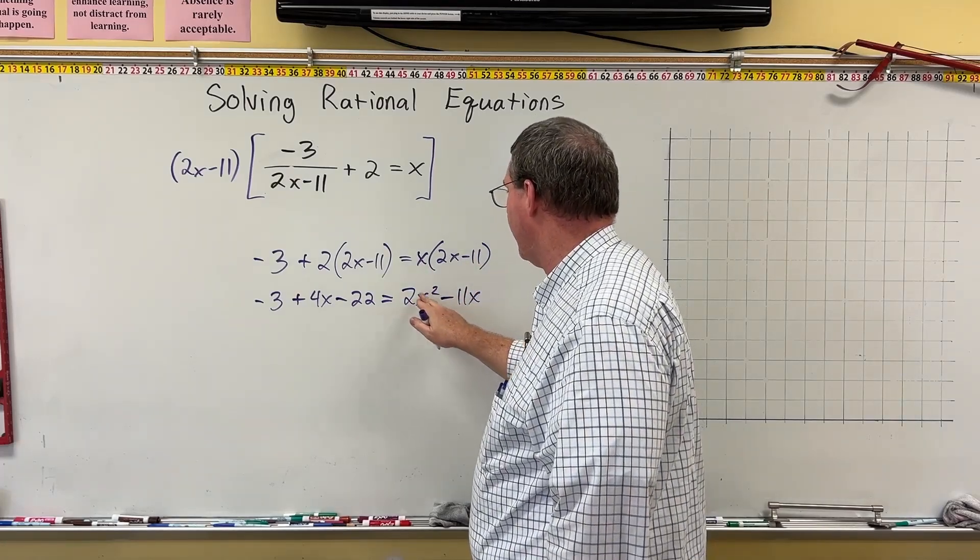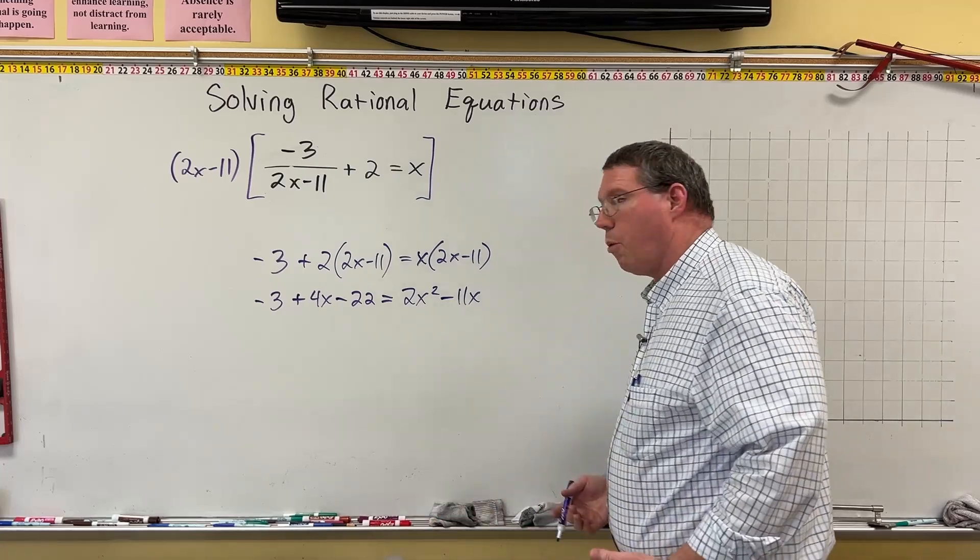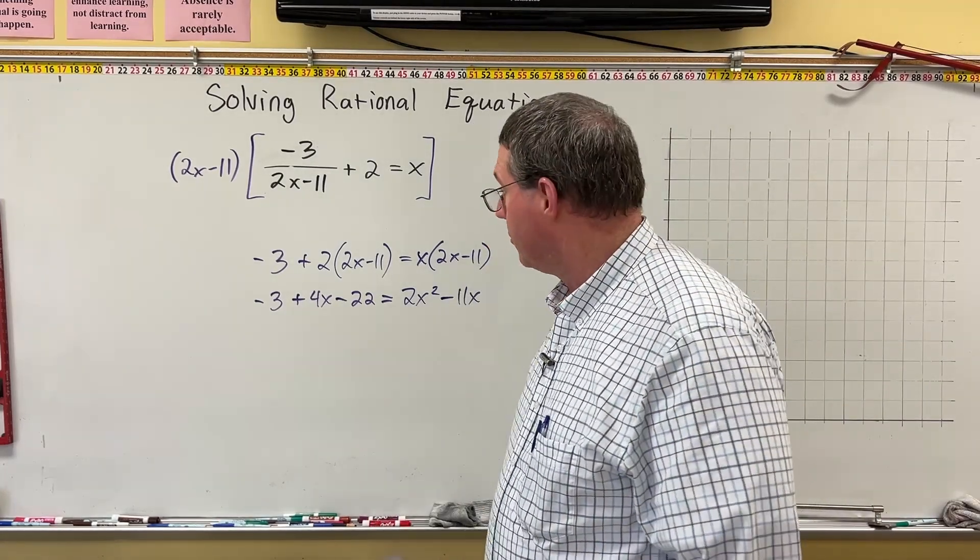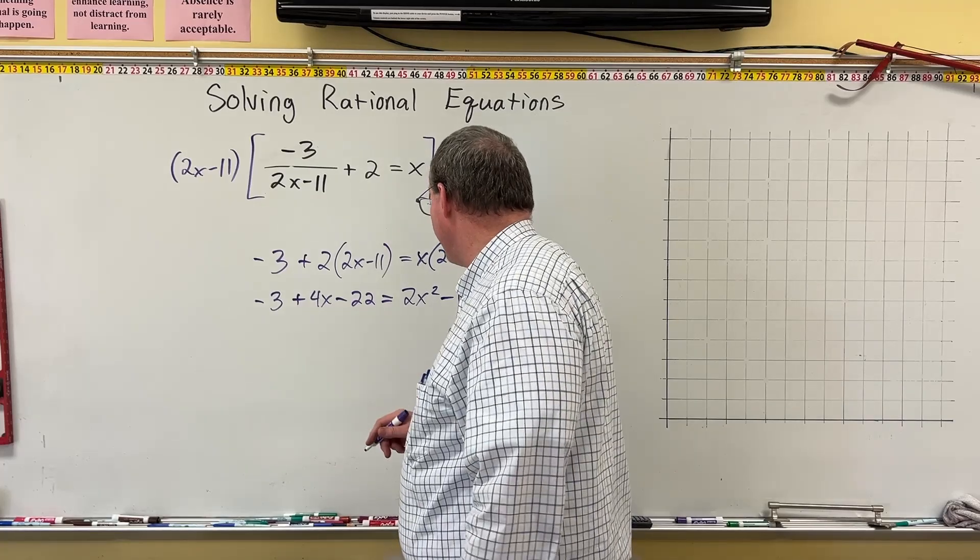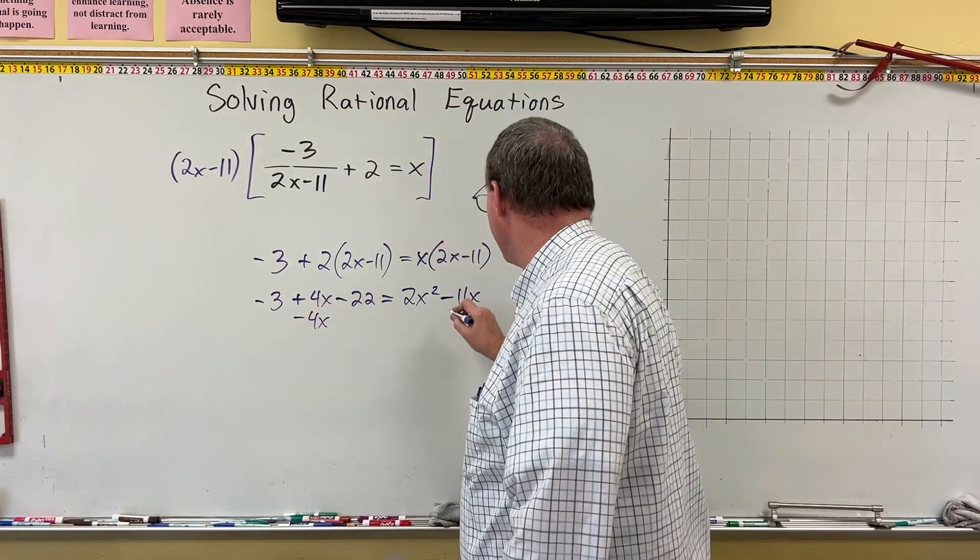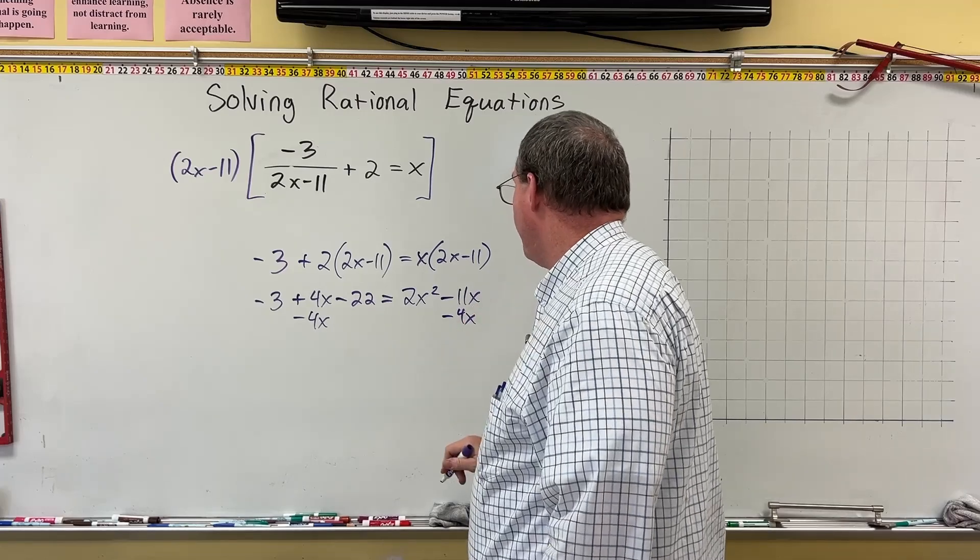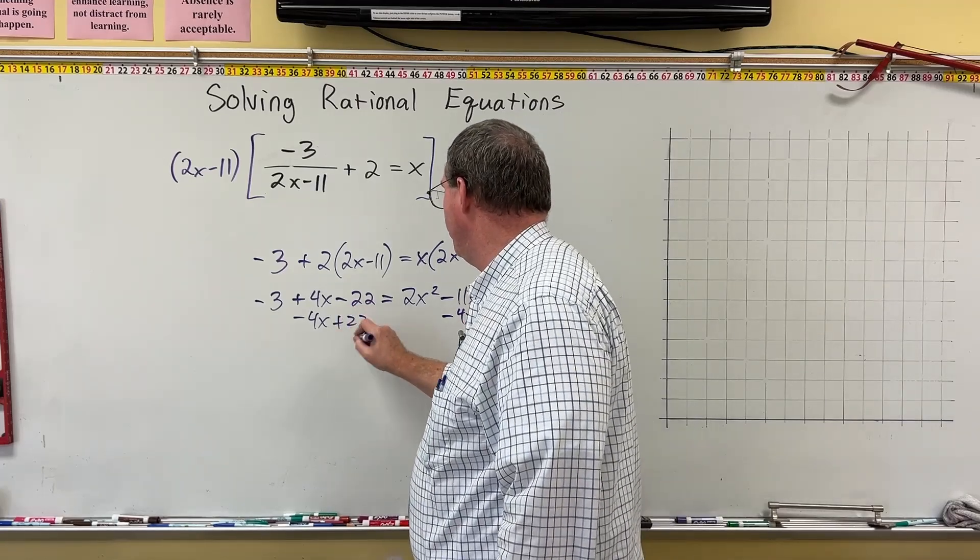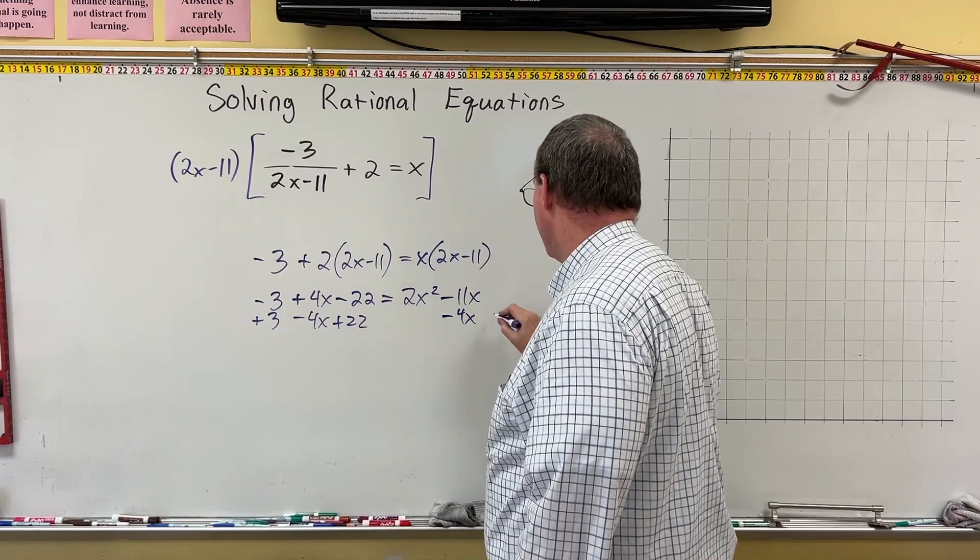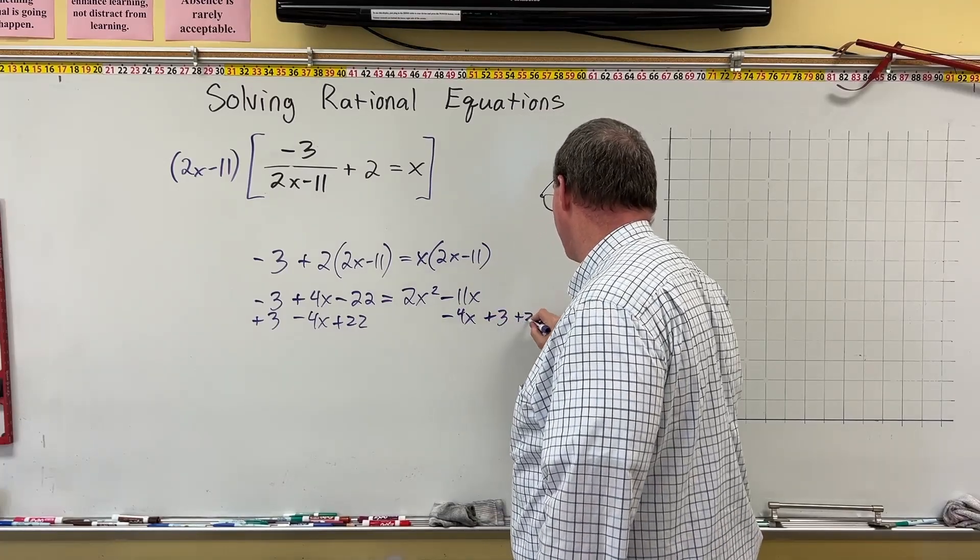So you can see here this is quadratic. This is an equal sign. It's a quadratic equation, so I'm probably going to use the quadratic formula to solve it. All right, so I need to set everything equal to 0. So I'm going to subtract 4x from both sides, minus 4x. And then here I'm going to add 22 and I'm going to add 3. So I'm adding 3 and 22. So plus 3 and plus 22.